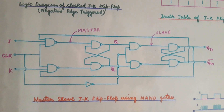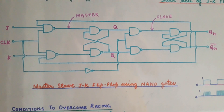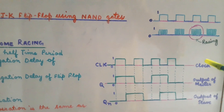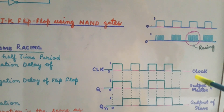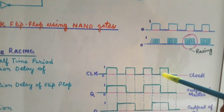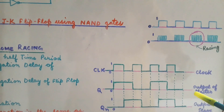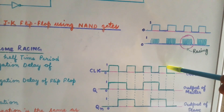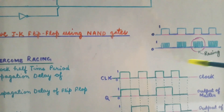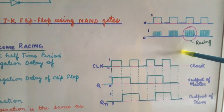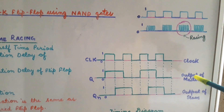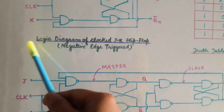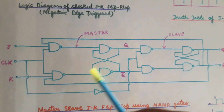This is what we call toggling. In order to understand it better, we have drawn the clock and will see the output of the master and the output of the slave corresponding to the clock values given to the master-slave JK flip-flop. The clock is a function of time and the value of J and K is 1 throughout. We will plot Q — the output of the master. When the clock is high and J is 1, K is 1, the master will be operational and so its output will change.